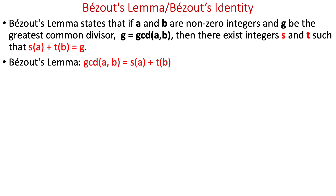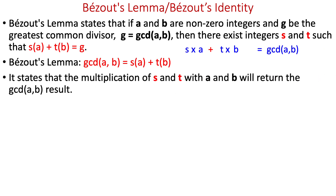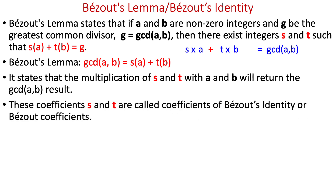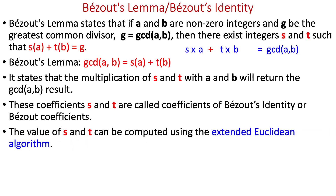Before we discuss the extended Euclidean algorithm, we need to understand an important concept: Bézout's lemma or Bézout's identity. In simple language, it states that if a and b are non-zero integers and when they are multiplied by two integer coefficients s and t, we get GCD of a and b. Bézout's lemma states that integer coefficients s and t exist — we call them Bézout's coefficients — and they return the GCD of a and b when multiplied to a and b. But we don't know these coefficients and we need a method to find them. This is where we use the extended Euclidean algorithm.